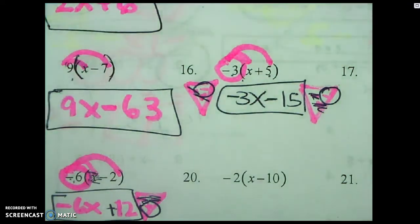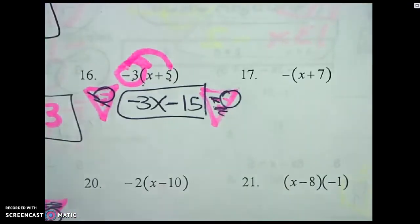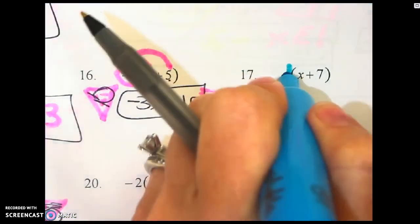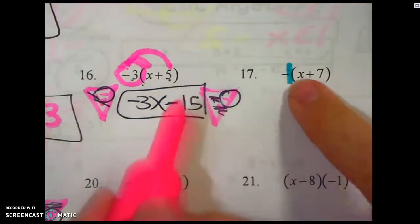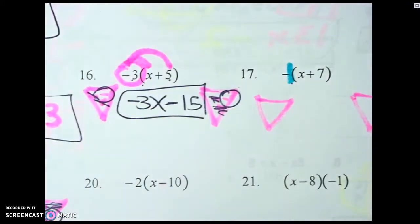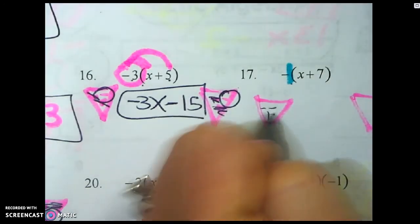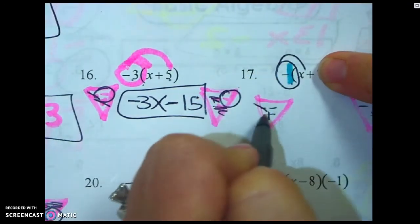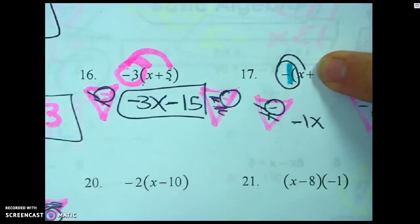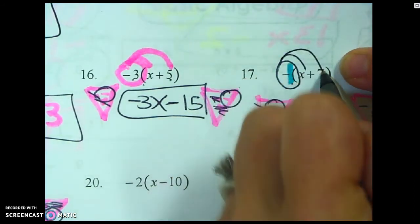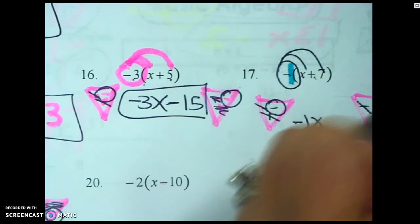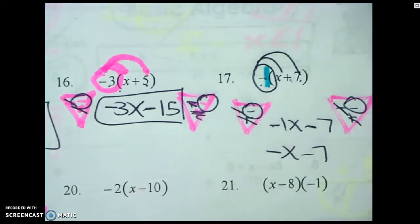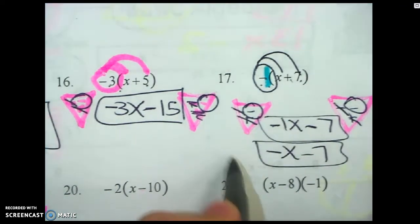Let's try another one. This time we see a negative but there's no number there, so we put an imaginary one. As soon as I see a negative, I do two triangles: negative times positive is negative, so negative one x. I give again — a negative times a positive is a negative, and one times seven is seven. You can write it as negative x minus seven, or negative one x minus seven — both are good.